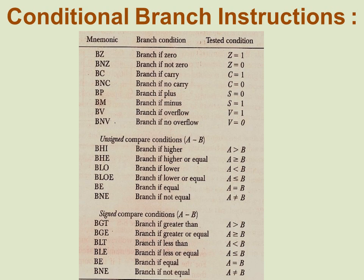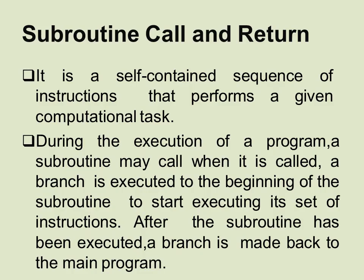For signed compare conditions: BGT is branch if greater than, BGE is branch if greater or equal, BLT is branch if less than, BLE is branch if less than or equal, BE is branch if equal, and BNE is branch if not equal. Note that BNE and BNZ are identical in function, as are BE and BZ.